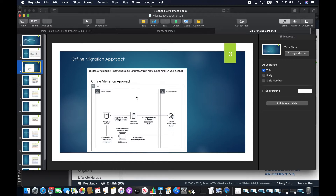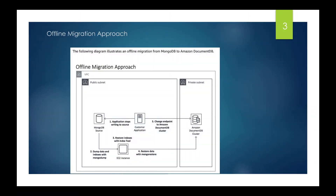We'll start with the offline migration approach. As you can see in the diagram, I am first going to install MongoDB as the source in an EC2 machine inside a VPC. Assume there is a customer application writing to this MongoDB source, and then there is an Amazon DocumentDB in a different subnet within the same VPC.